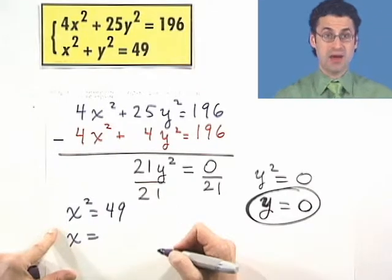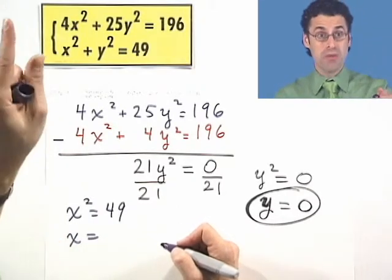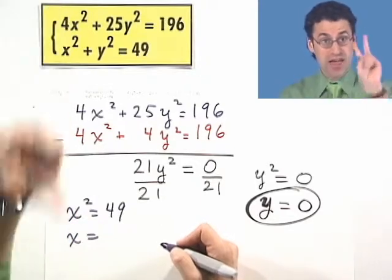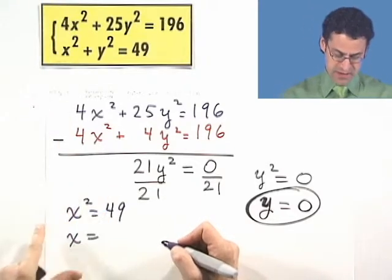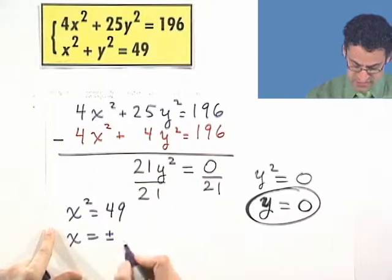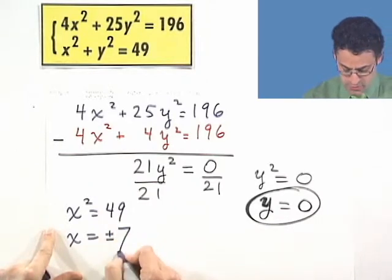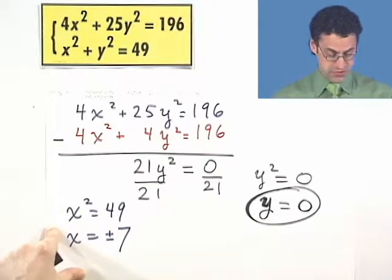That means x equals 7, right? Is that right? No, because there are two answers. I see a quadratic. Quadratic, two answers. Take the plus or minus square root, and I see plus or minus square root of 49, or plus or minus 7. Two answers.